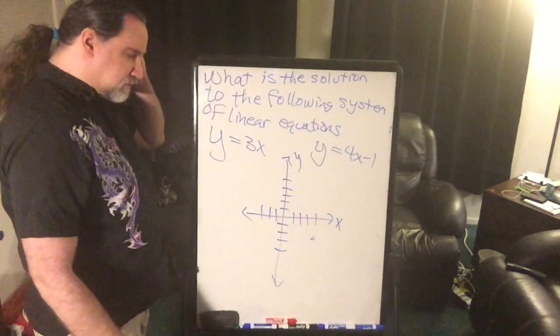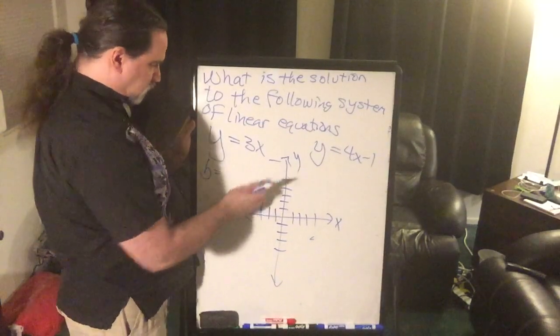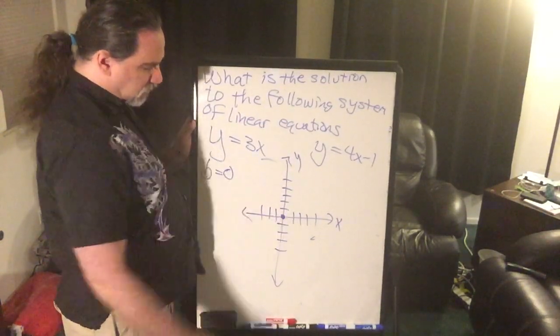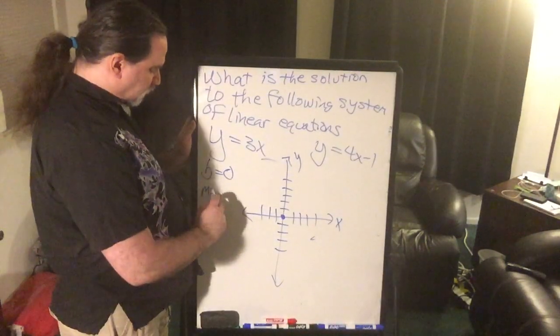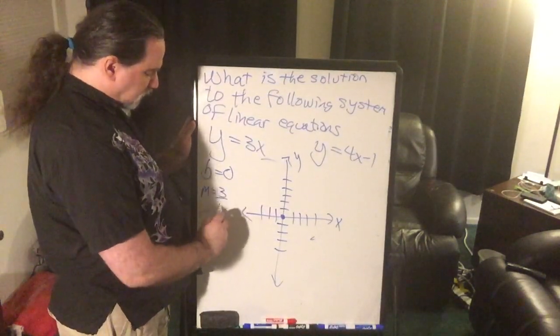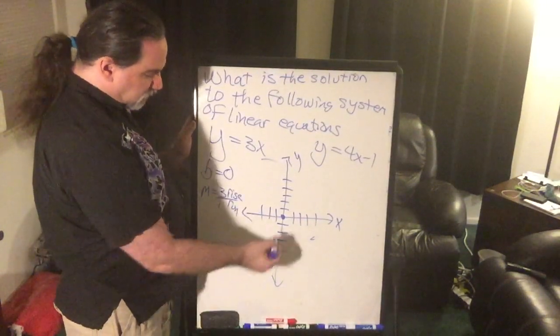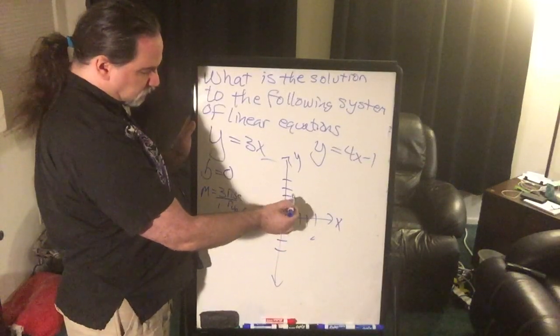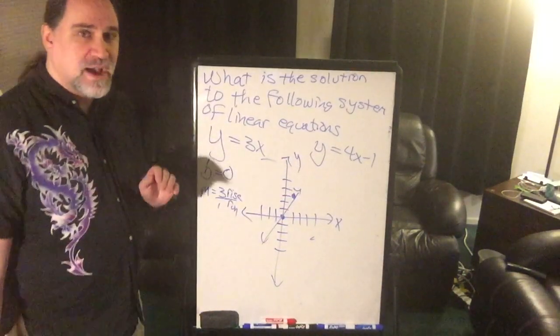So we'll start with the one on the left. We have a b value of 0, so I'm going to start at the origin. And we have a slope of 3. I can make anything a fraction by putting a positive 1 under it, so I have a rise and a run. I'm going to rise 1, 2, 3 and run 1. And there's my first graph.